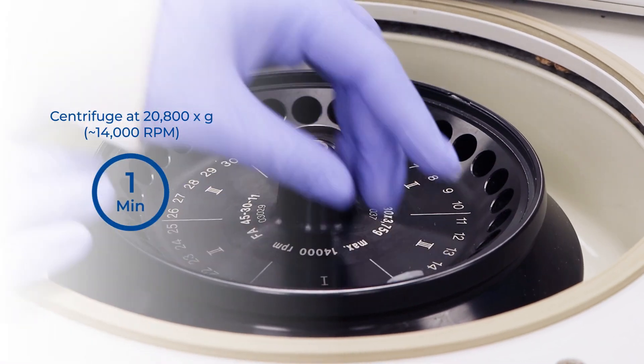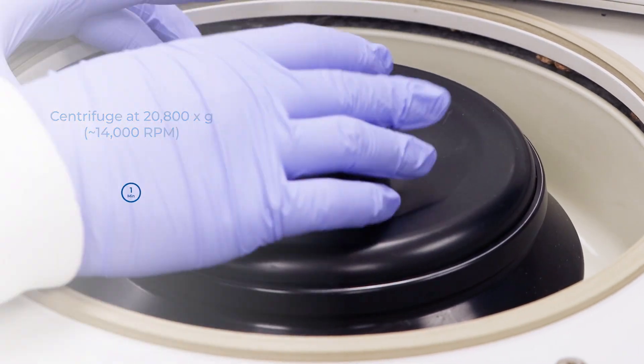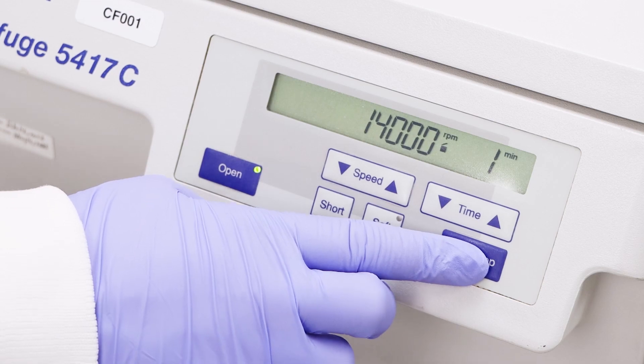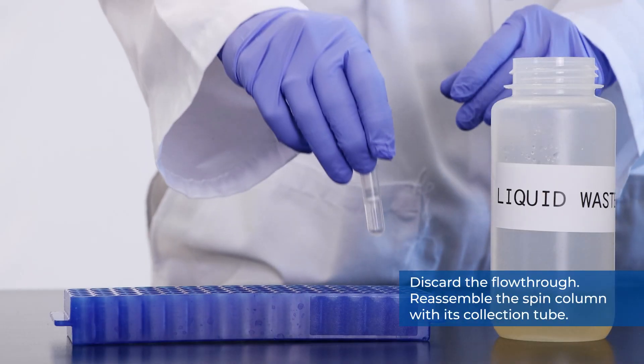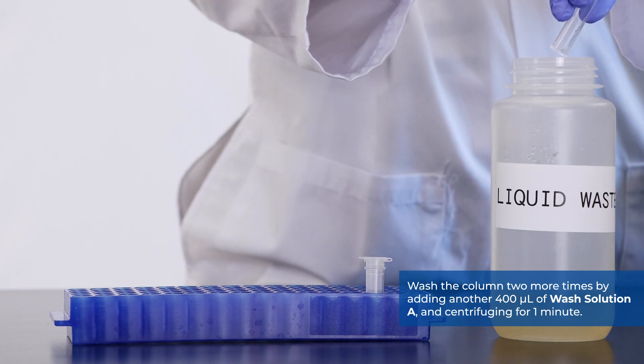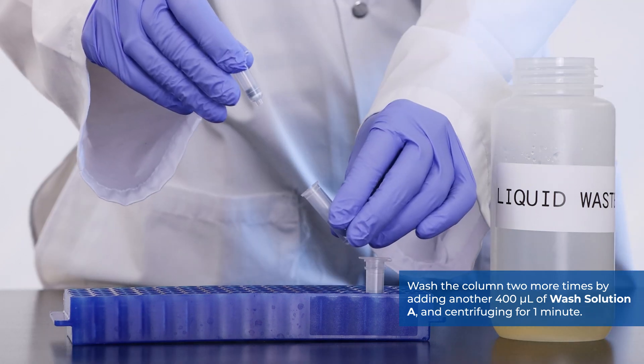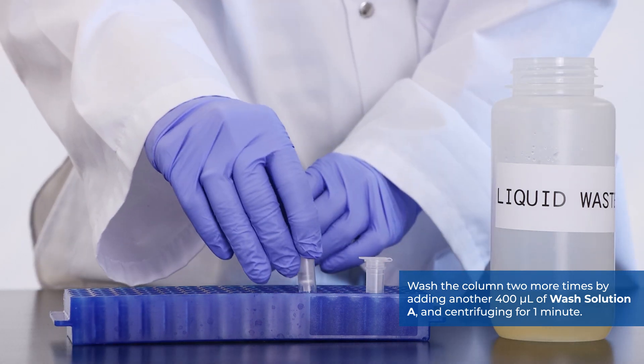And centrifuge for 1 minute. Discard the flow-through and reassemble the spin column with its collection tube. Wash the column 2 more times with 400 microliters of wash solution A and centrifuging for 1 minute.